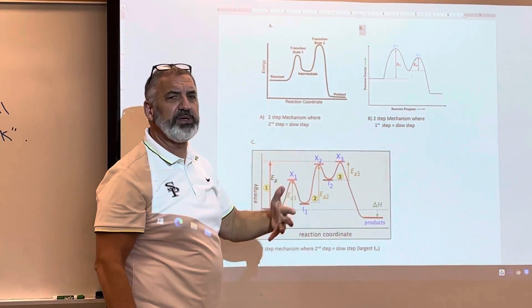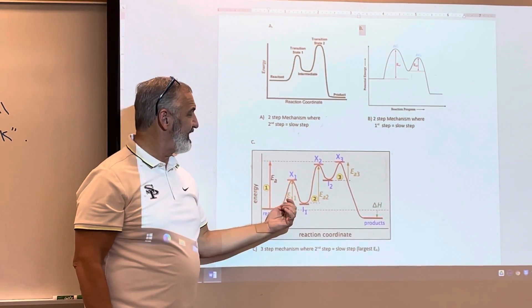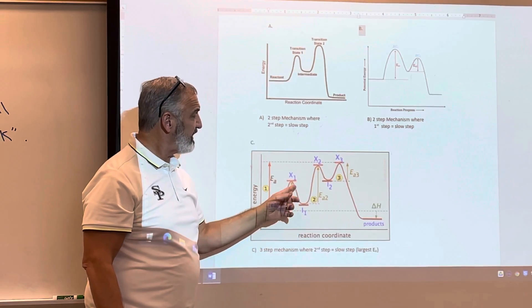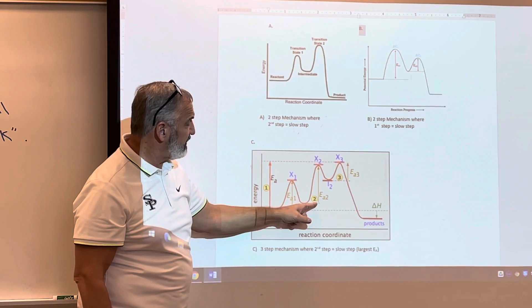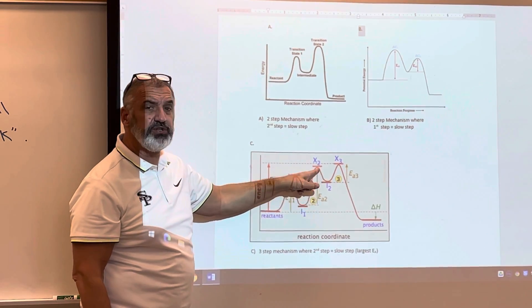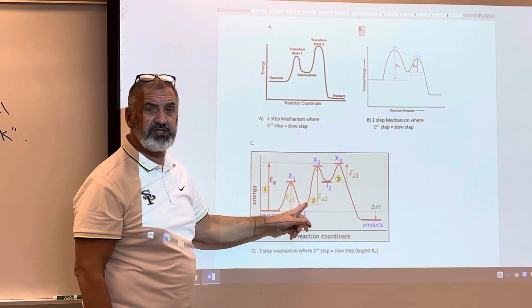And then if you happen to have a reaction that has three steps, then you're going to have three different peaks, three different activation energies. So when you look at this one, you can see that activation energy two is the greatest, thus step two of this mechanism must be the slow step.